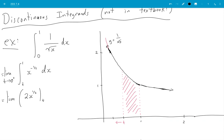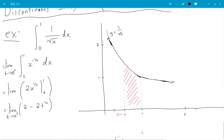Yeah. From t to 1, which is limit 2 minus 2t to the half. And remind ourselves, t is going to 0 from the right. So we get 2 minus 0, which is 2. So this area is 2 square units.